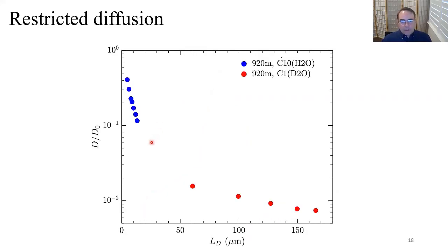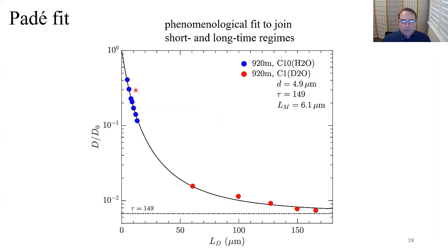We plot restricted diffusion D/D₀ for both decane and methane data as a function of diffusion length, then fit to the Padé fit. The Padé fit is a phenomenological model joining the short-time to the long-time regimes and has three free parameters: pore size, tortuosity, and the heterogeneity length scale L_m — something we're investigating for its physical meaning.